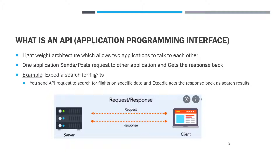One example is Expedia Search for Flights. You may have sent API requests to search for flights on a specific date, and Expedia gets the response back and sends all the results back to you.